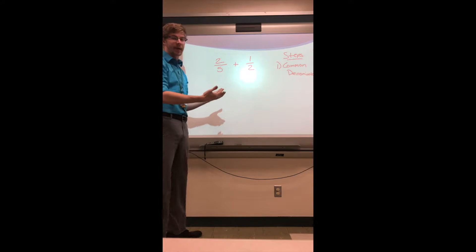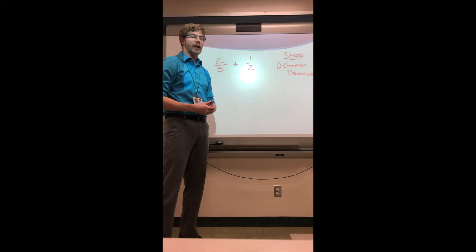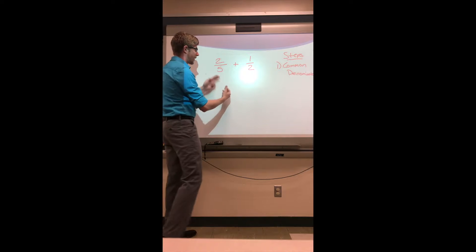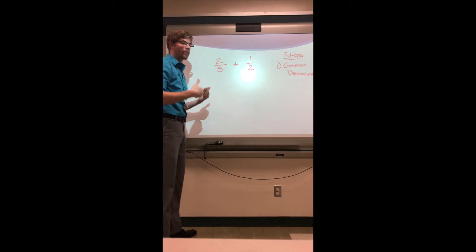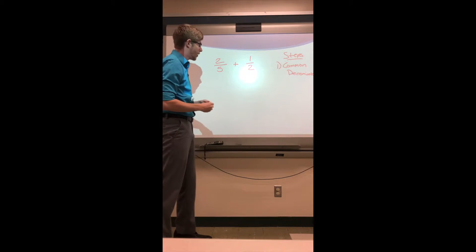So in this problem here, my denominators, again which are my bottom numbers, they're not the same. Common meaning the same. I need my fractions to have the same denominator, so what I have to do is I have to look at my two denominators which are five and two and I have to decide what number can I get them both to using multiplication.